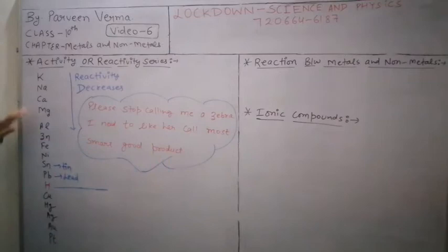It is written in this order. Here we have mentioned symbols like potassium, sodium, calcium, magnesium, aluminium, zinc, iron, nickel, tin, lead, hydrogen, copper, mercury, silver, gold, platinum. These symbols are written here.